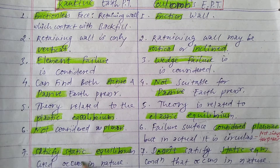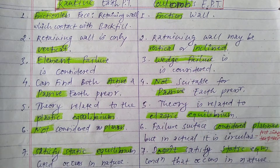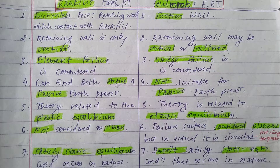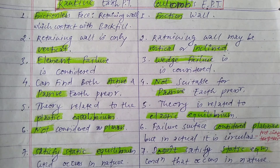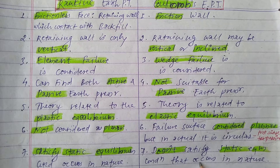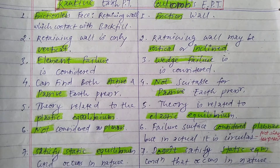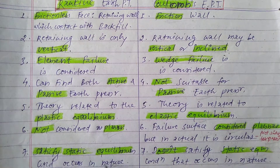Seventh difference: Rankine's earth pressure theory satisfies the static equilibrium condition that occurs in nature. But in Coulomb's earth pressure theory, the static equilibrium condition that occurs in nature is not satisfied. This is one of the most important points to remember.